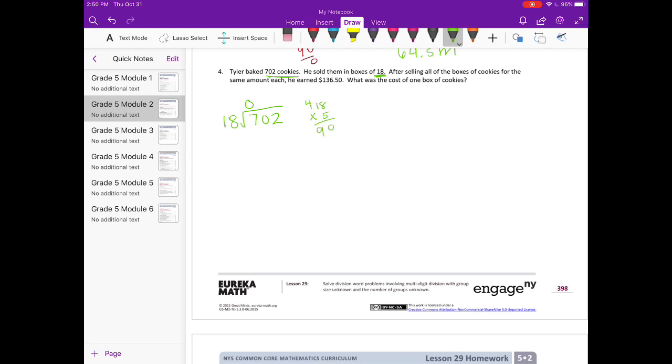18 can't go into 7, but it could go into 70. Let's try 5 times. Nope, that's too big. So let's try... I think even 4 would be too big. So 18 times 3. Okay, 54. So it can go in 3 times. We get remainder 16. Bring down the 2.